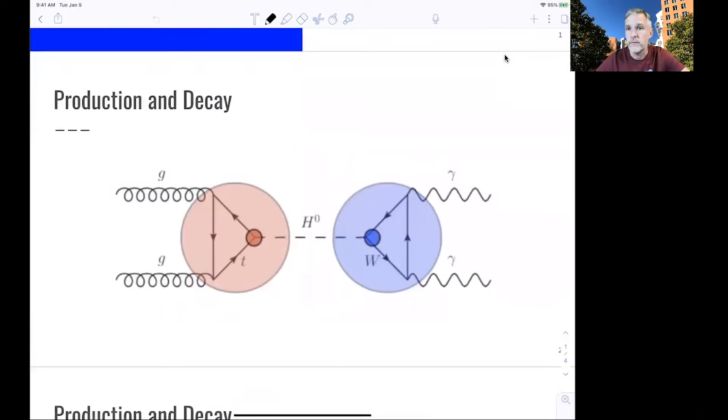We are able to produce Higgs bosons at proton-proton colliders because they produce collisions with energies at a mass scale consistent with the Higgs boson.